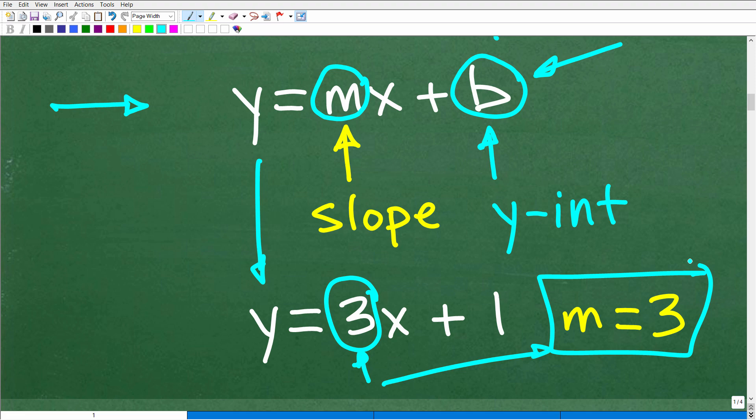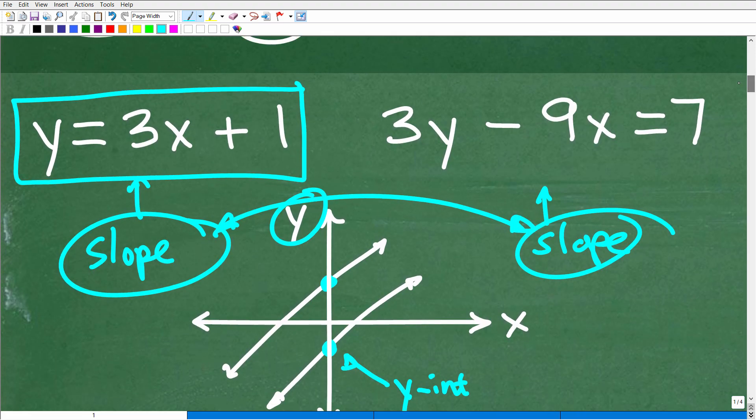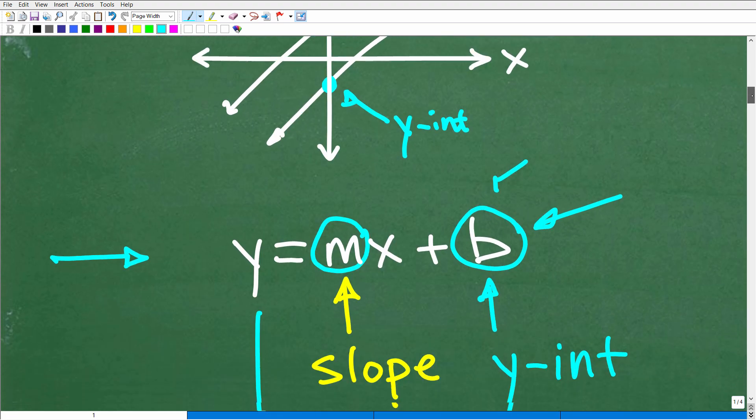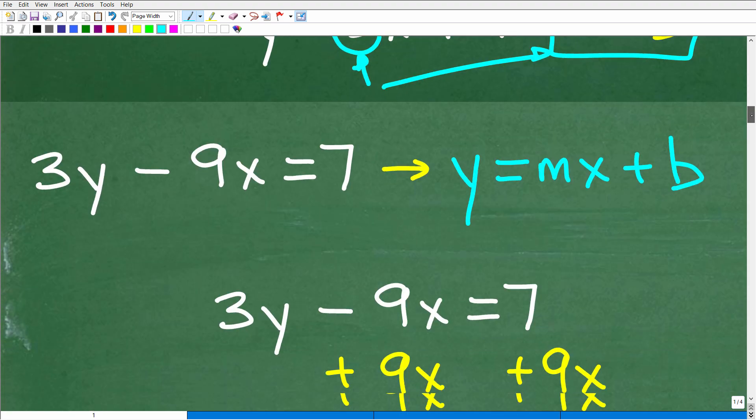That is so easy, right? Too bad that this other line is not in y equals mx plus b form. So what we can do, though, is fix up this line such that it is in y equals mx plus b form.